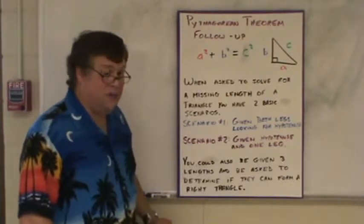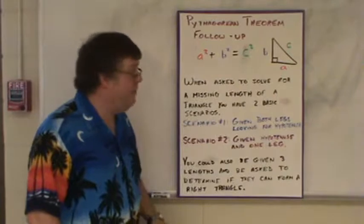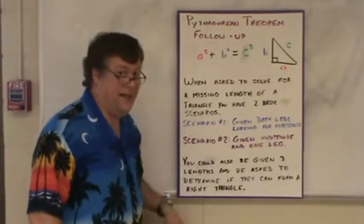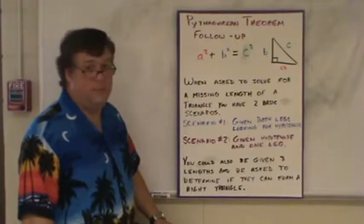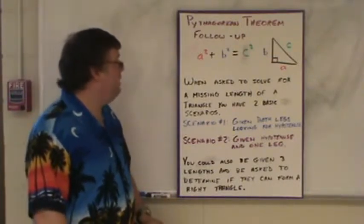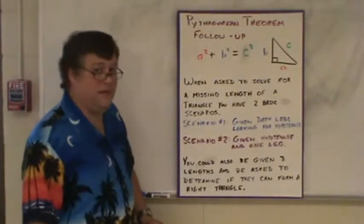A and B are the legs of the triangle. They're the ones attached to the 90-degree angle. And C is the one that's opposite or the one that's not attached to the 90-degree angle, C being the hypotenuse. When asked to solve for a missing length of a triangle, you have two basic scenarios.